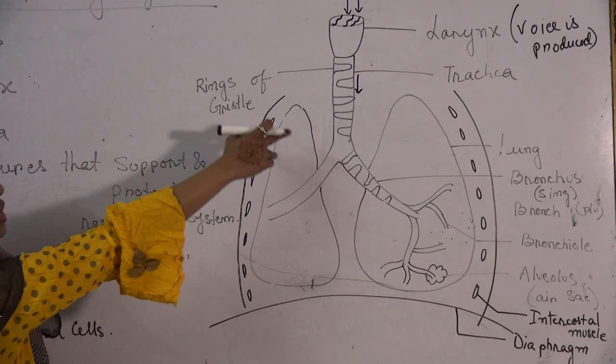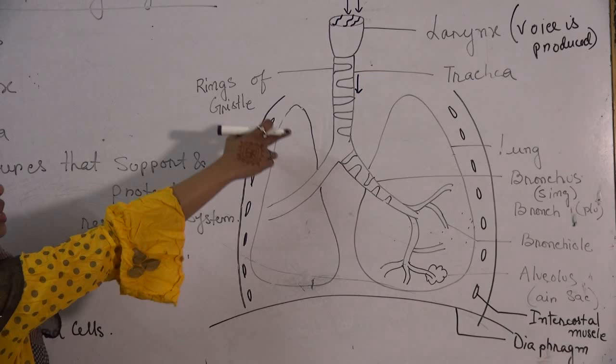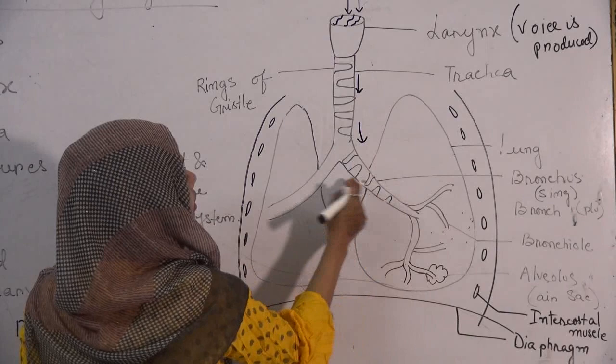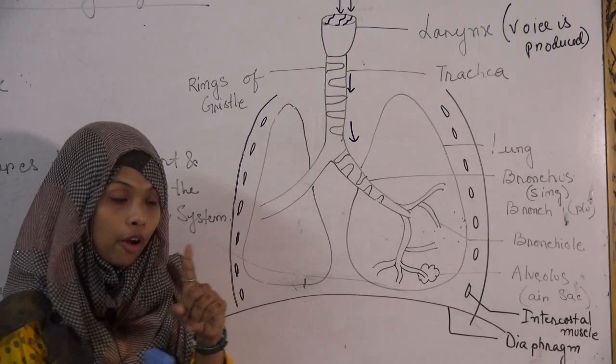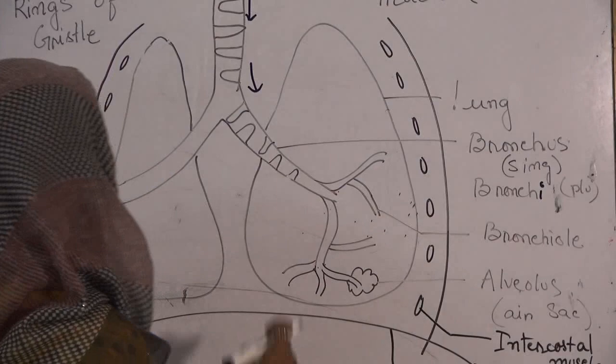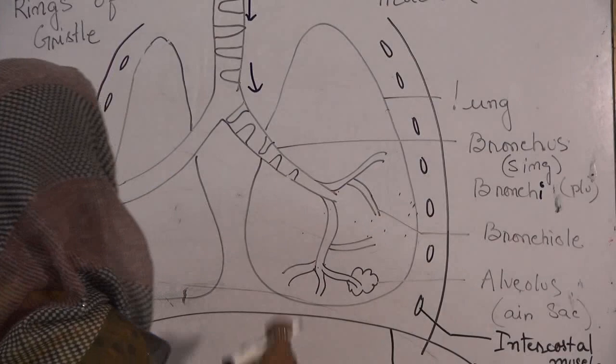So the trachea is protected by the rings of gristle. Moving on, the trachea leads air down into two branches known as the bronchus. If you talk about just one branch it is known as bronchus; if you talk about both of them it is known as bronchi — plural is bronchi, singular is bronchus. Each bronchus enters each lung, so one will be entering into one lung.